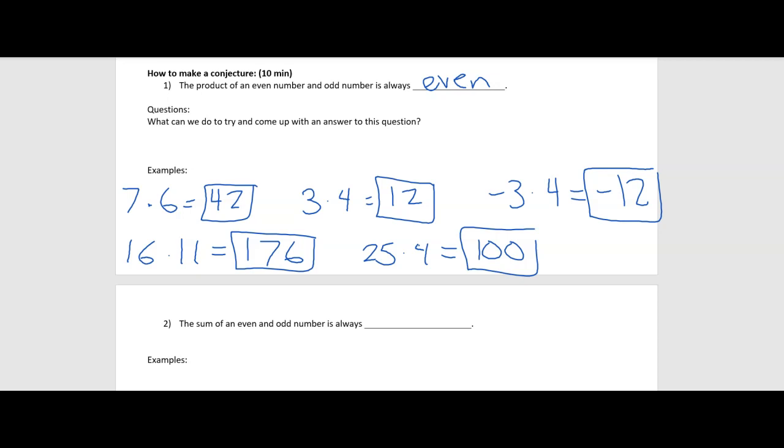We can be somewhat confident because for all the examples we tried, our conjecture was true. It doesn't mean it's always true. Because we haven't tested every example yet. We haven't had a proof. But we have a good feeling about it.